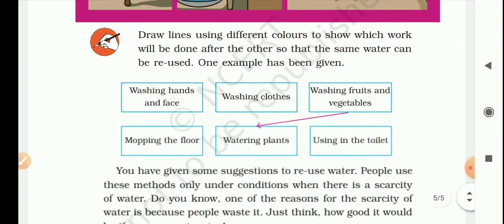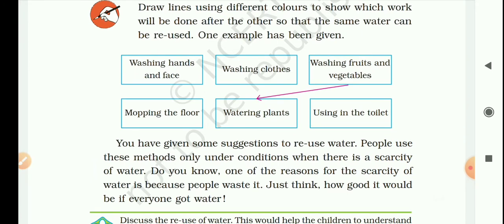Next, here few boxes are given and we are required to join them according to their relation. One example is already shown here. What is the example given?